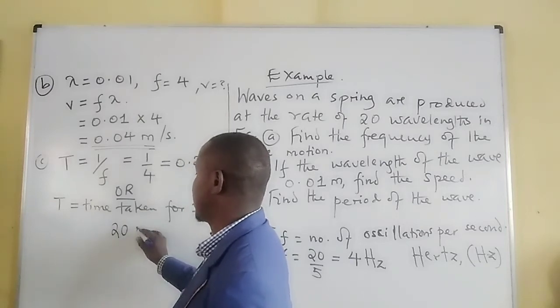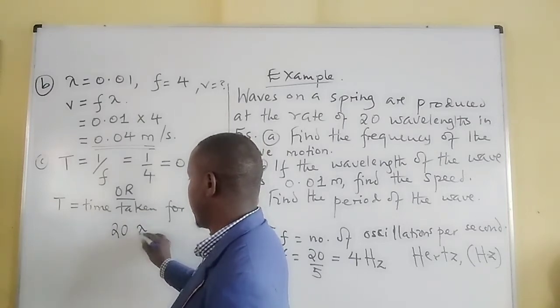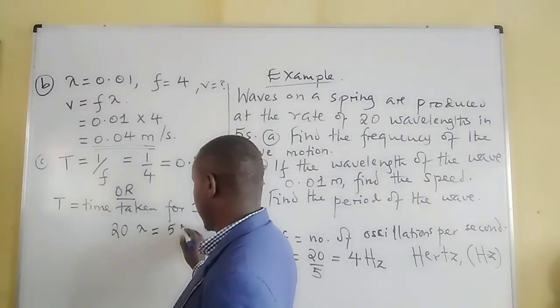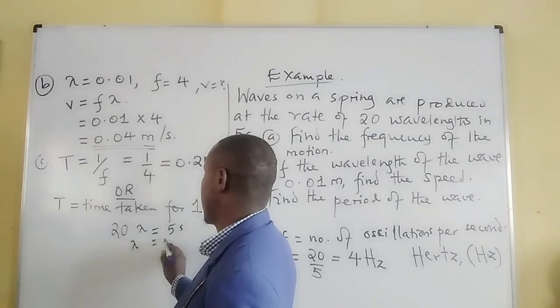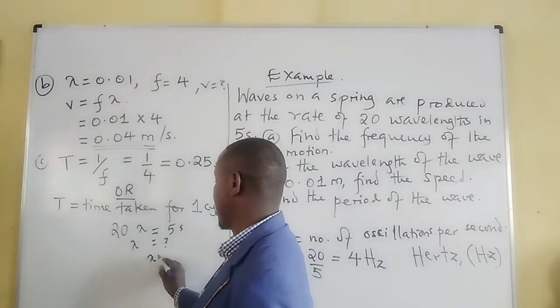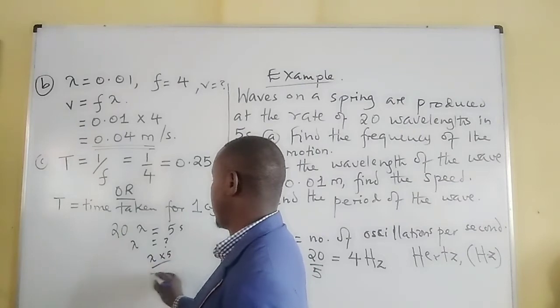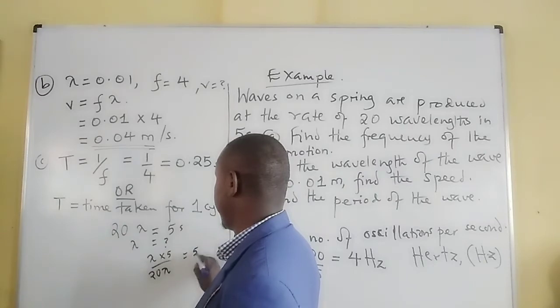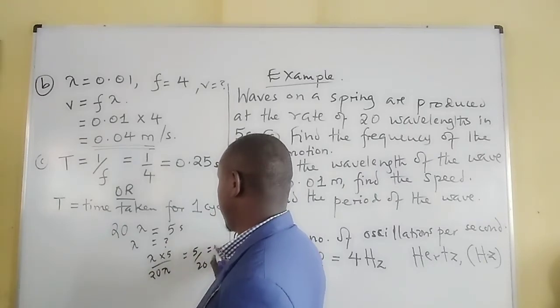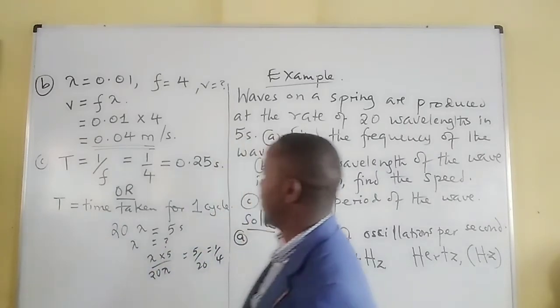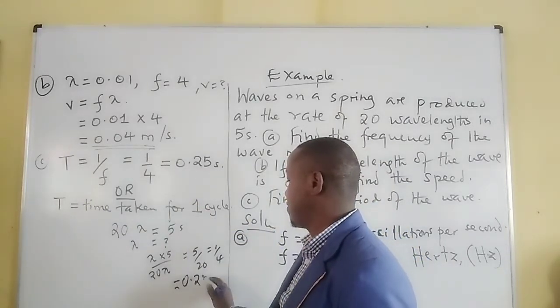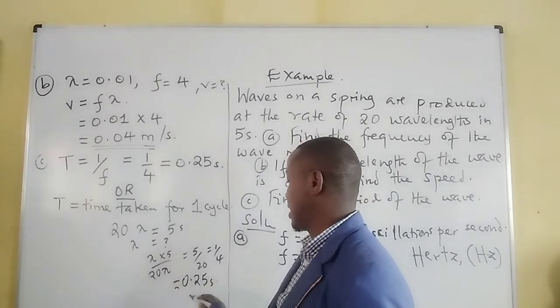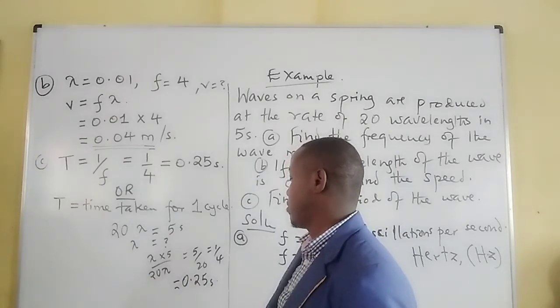If 20 wavelengths take 5 seconds, then what about one complete wavelength? How long will it take? So it will be 5 over 20, which is 1 over 4. This will take us to the same answer, 0.25 seconds.